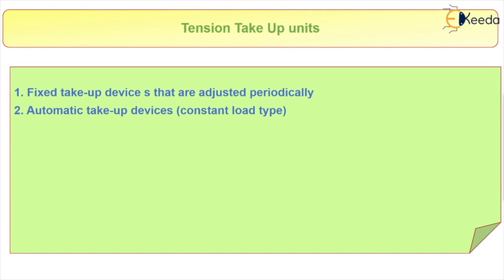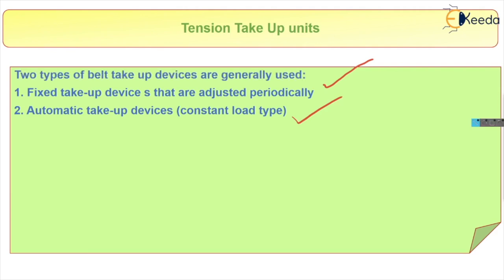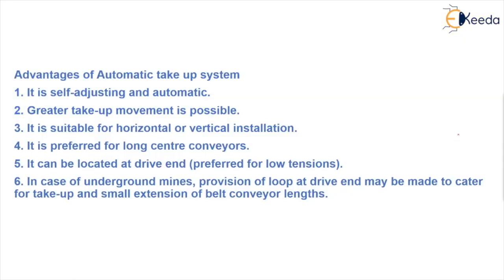So these are the four functions of tension take-up units. Now, what are the types? There are two types: number one is the fixed take-up device, which is adjusted periodically, and second is the automatic take-up device. Out of these two, the automatic type is generally used most commonly — we will now look at why.